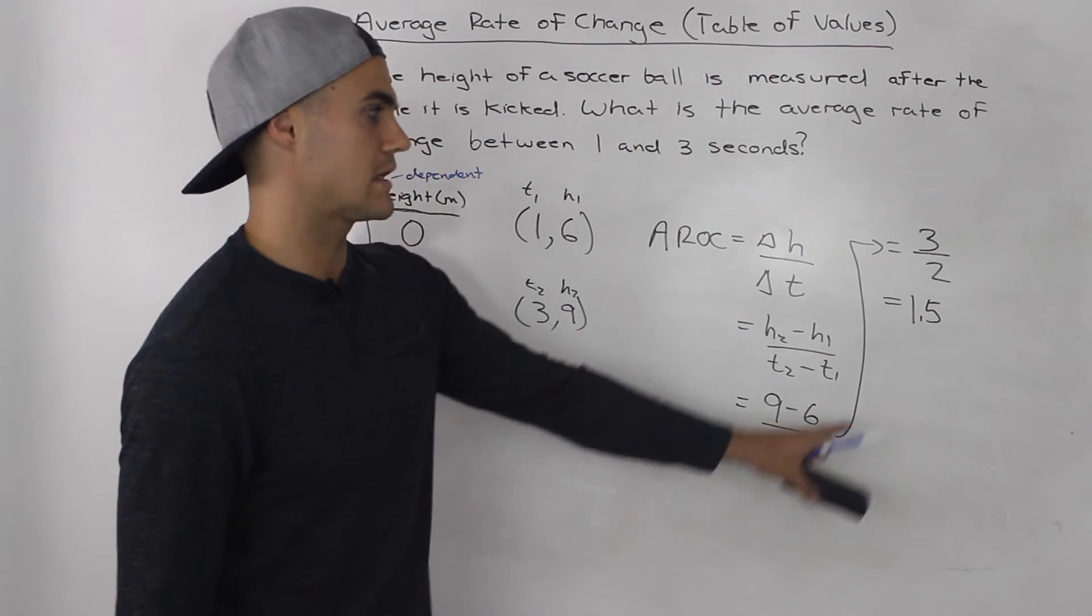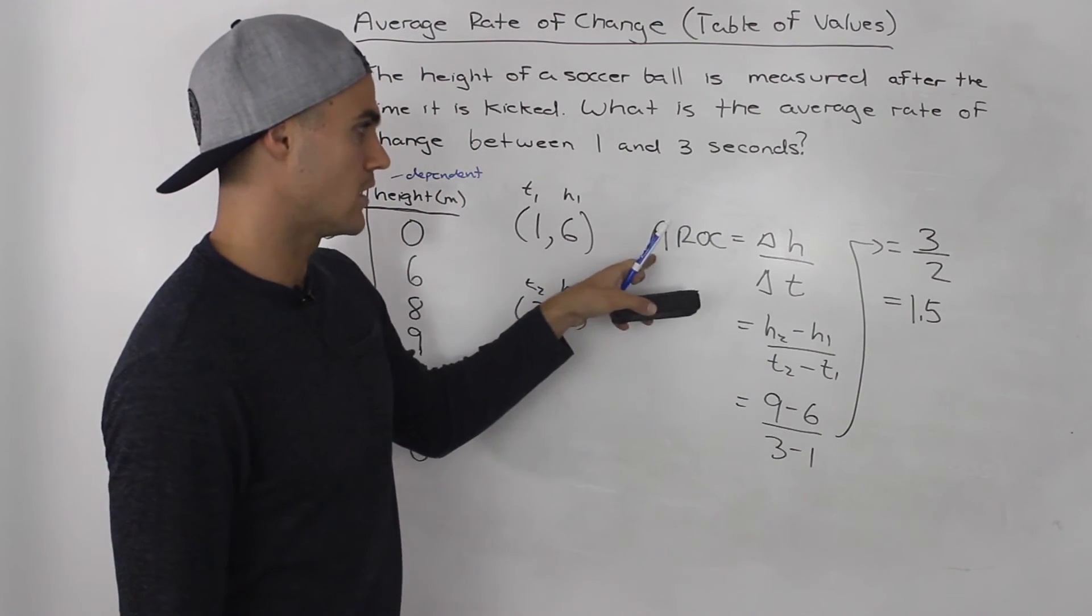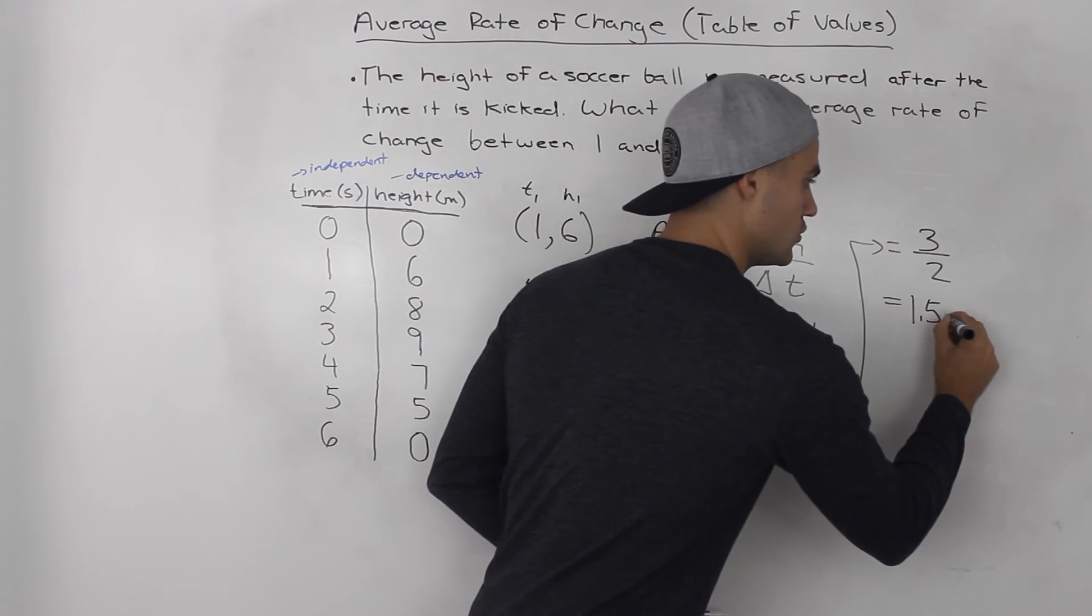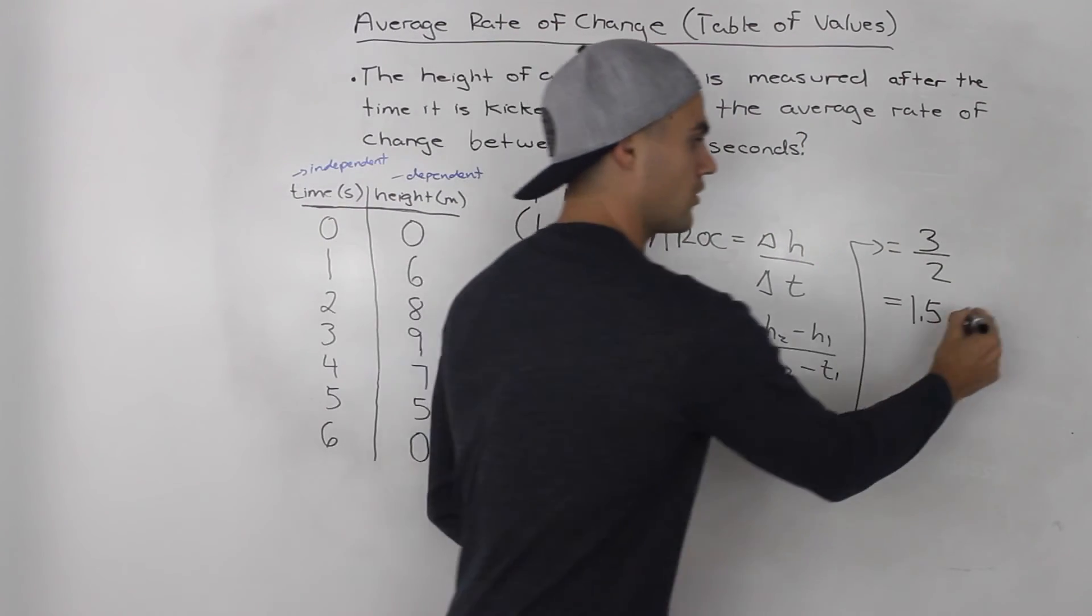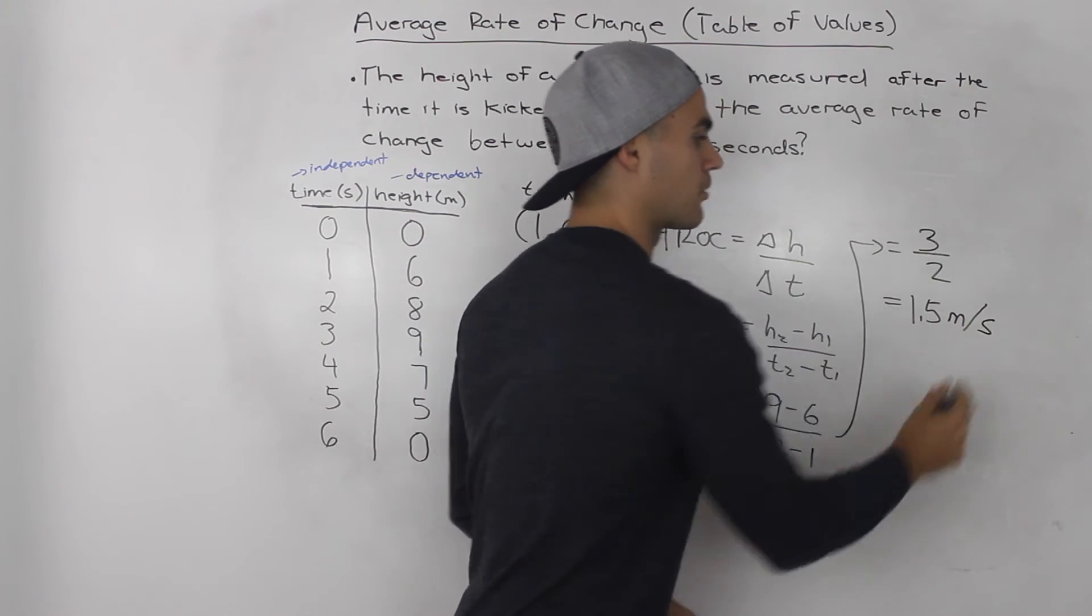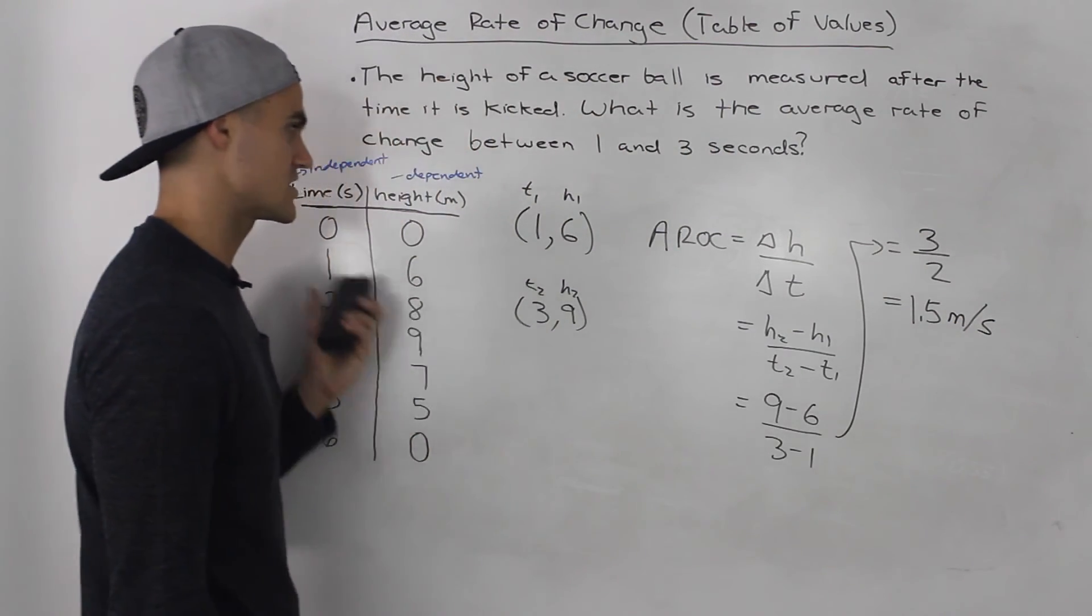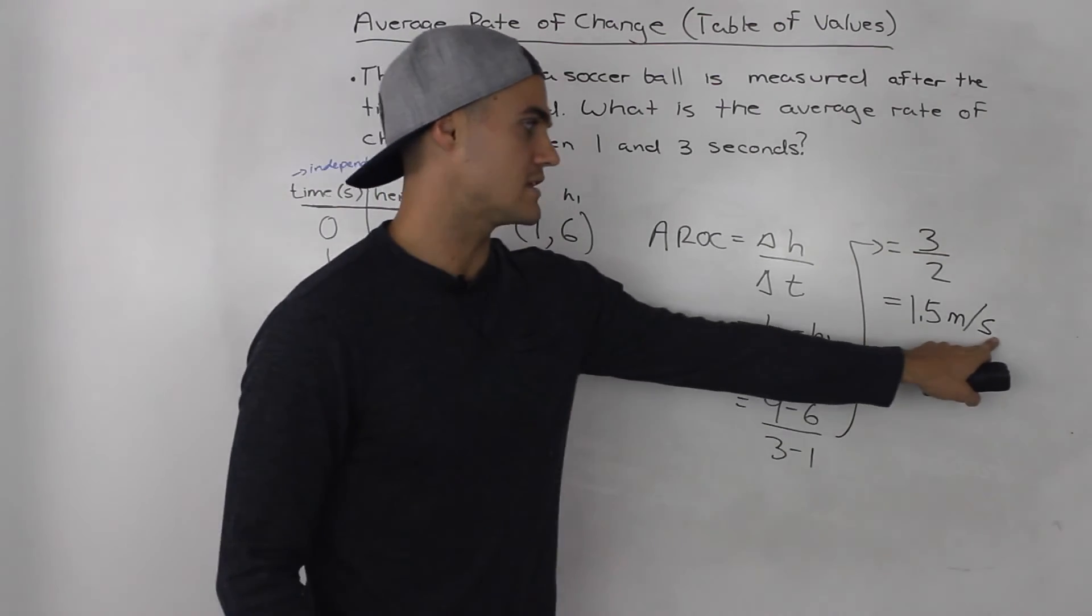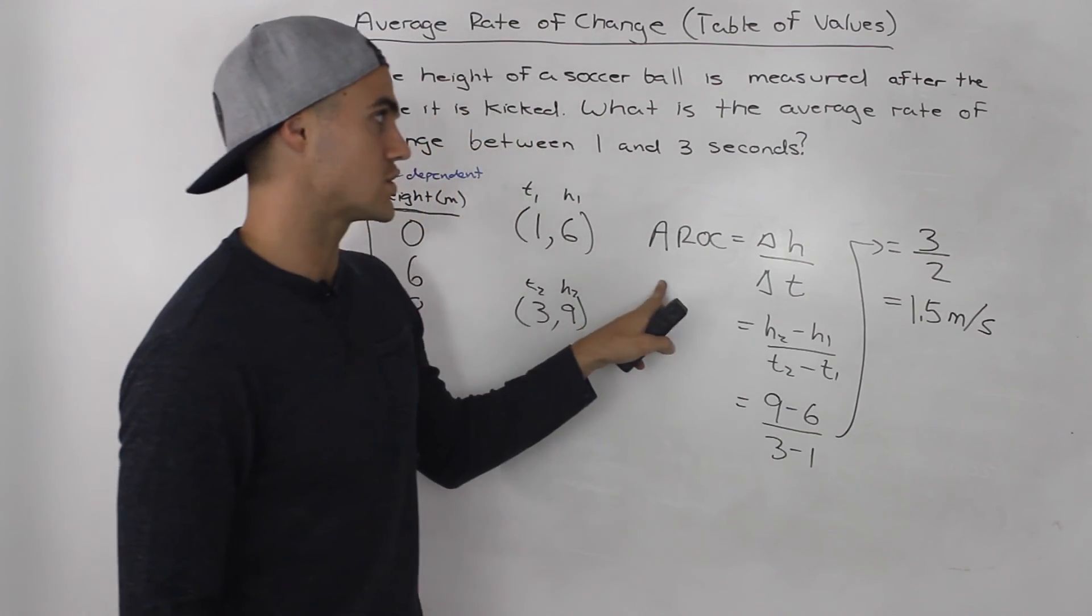Now, what would be the units that the average rate of change is in? Well, it's 1.5 meters, which is the units that the dependent variable is measured in, per second, per one unit change in the independent variable, which is time. So don't forget these units of measurement for the average rate of change when you're dealing with an actual scenario.